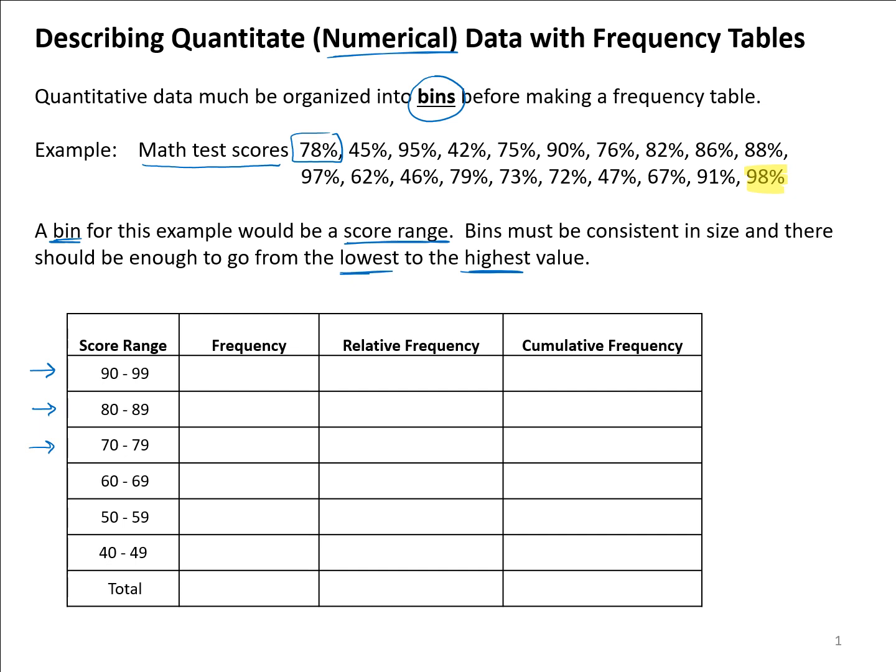That's why it's important that I started my first range in the 90s for my score range. Then the lowest score appears to be about a 42, so notice my table goes to a bin of 40 to 49 to make sure I get the lowest value in before I stop the table.